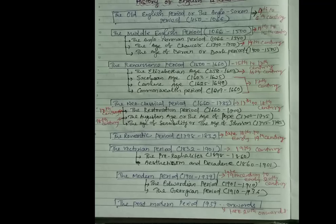First, you can see the Old English period or the Anglo-Saxon period that started from 450 until 1066, and it belonged to 4th to 6th century, I have written there.